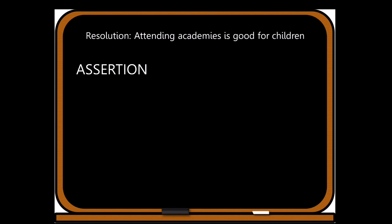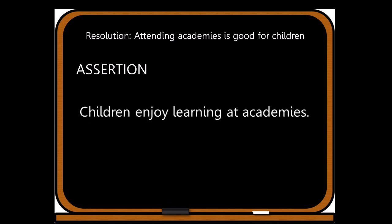Let's go to the drawing board and try to make an assertion. Our resolution today is: attending academies is good for children. If we're thinking for the pro side, we should create an argument that describes how academies are good for children. The assertion we have today is: children enjoy learning at academies. This is a good assertion because it supports the resolution, it is a statement that can be supported with reasoning, and evidence can be found to support this argument.